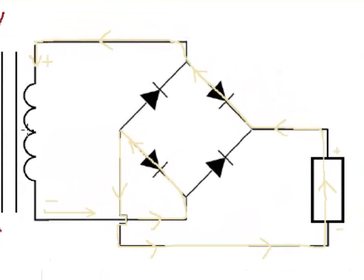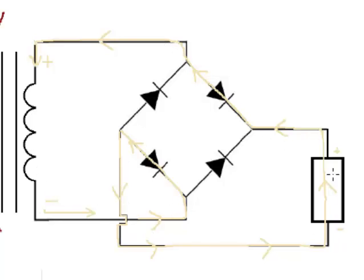The flow is continuous through the secondary coil — it goes through this diode, through the component, and back around, just like this. That's of course ignoring its intensity, but that is its path for this alternation.